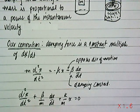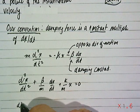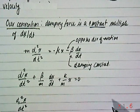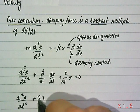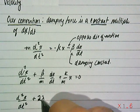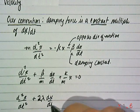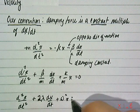And typically this is written in a different form to use particular coefficients that have physical meaning. We can rewrite this as the second derivative plus 2λ dx/dt plus ω² times x equals zero.